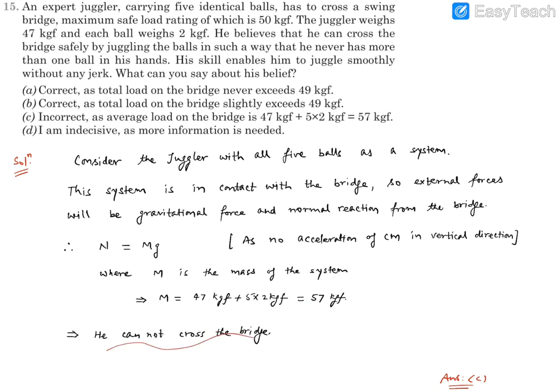He cannot cross. Whatever the belief he has, that is incorrect, because average load on the bridge will fall equal to 57 kilogram force. Hence, we will mark the option C. Thank you.